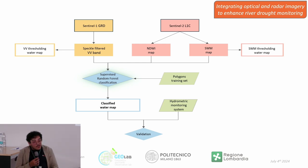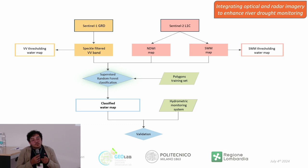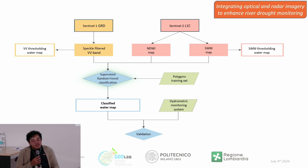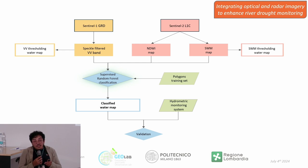In the first part of the work, we proposed integrating satellite imagery from both sources using a supervised Random Forest classification algorithm. We stacked three bands: one from Sentinel-1 SAR imagery and two optical indices — NDWI and SWM (Sentinel Water Mask) — specifically built for detecting water. These were fed into the Random Forest classifier along with training polygons drawn by photo interpretation, containing information on what is water and what is background. We then obtained classified water maps and validated the results.